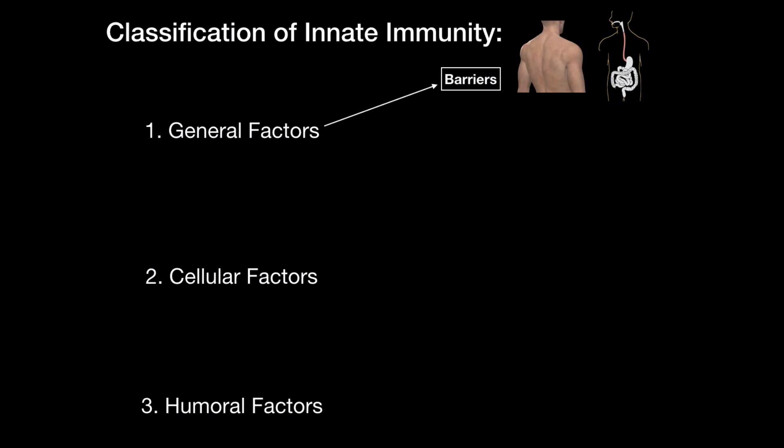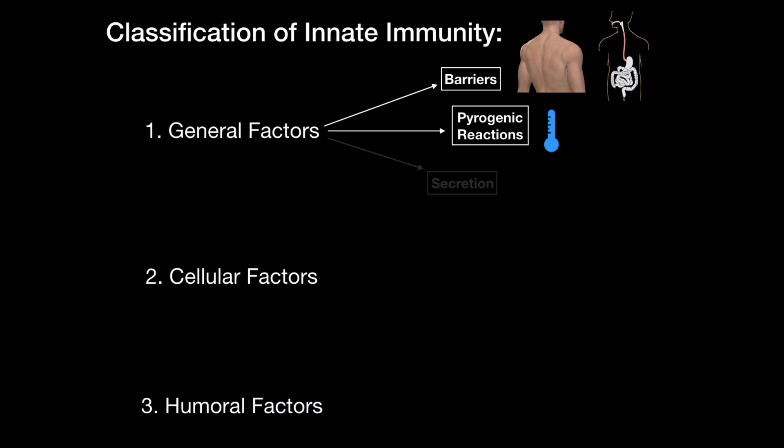The general factors include physiological barriers at the portal of entry, like the skin and the mucous membranes, and they are usually the first line of defense. Next, we have the pyrogenic reactions — don't get scared if you haven't heard this term before. Pyrogenic reactions often refer to fever. Some viruses and bacteria cannot really replicate optimally because the body changes its temperature. Another general factor is secretion — secretion of different enzymes and fatty acids.